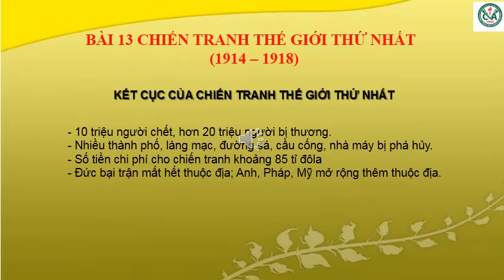Bài 13: Chiến tranh thế giới thứ nhất năm 1914-1918. Các em sẽ học phần kết cục của chiến tranh thế giới thứ nhất. Nội dung gồm: 10 triệu người chết, hơn 20 triệu người bị thương. Nhiều thành phố, làng mạc, đường xá, cầu cống, nhà máy bị phá hủy. Số tiền chi phí cho chiến tranh khoảng 85 tỷ đô la.